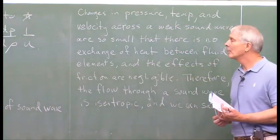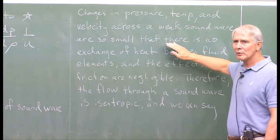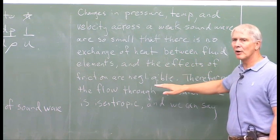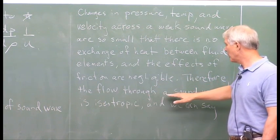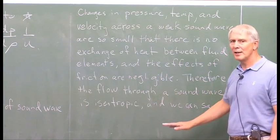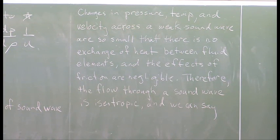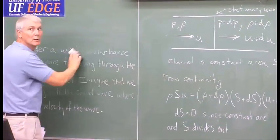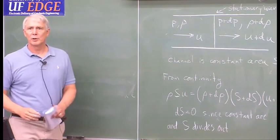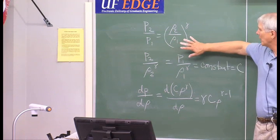Changes in pressure, temperature, and velocity across a weak sound wave are so small that there is no exchange of heat between the fluid elements. Also, the effects of friction are very small and considered negligible. Therefore, the flow through the sound wave is isentropic. Now we want to consider our isentropic relations because we have an isentropic flow.